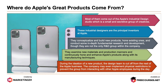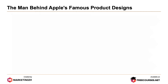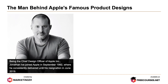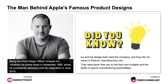During the ideation of a new product, the design team is cut off from the rest of Apple's business. The company may even implement physical restrictions to prevent the group from interacting with other Apple employees during the day. Being the chief design officer of Apple, Jonathan Ive joined Apple in September 1992, where he consistently delivered until his resignation in June 2019. Ive and his design team did not report to finance, manufacturing, etc. — they were given free reign to set their own budgets and the ability to ignore manufacturing practicalities.